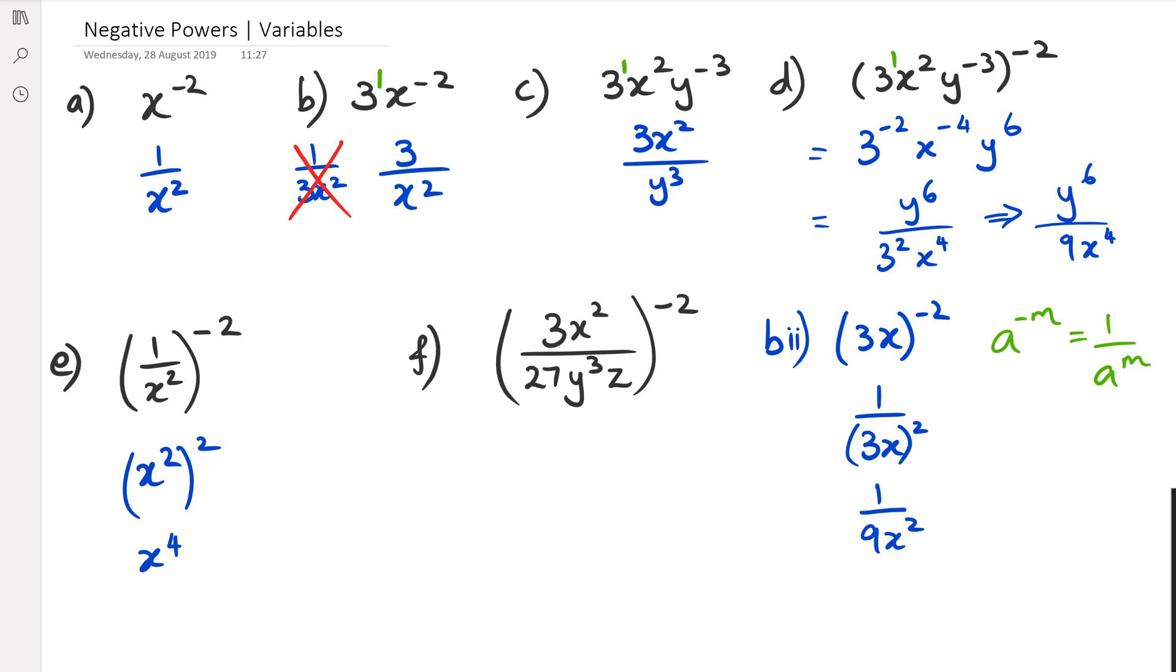So a similar kind of concept here with question F. I'm going to flip the fraction. So I'm going to rewrite this as 27y cubed z over 3x squared. And then instead of writing it as negative 2, I just write it as positive 2. So just be aware, guys, that when you're flipping the fraction, whatever's inside the bracket, you don't need to change any of the symbols. Because what you're actually doing is you're actually changing the symbol for the power. And so you don't really need to worry about it at that point.